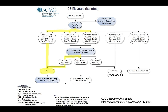This is a schematic from the ACMG Newborn Act Sheets for isolated elevated C5. The two main disorders to consider are isovaleric acidemia and SBCAD deficiency, which I've spoken about previously.